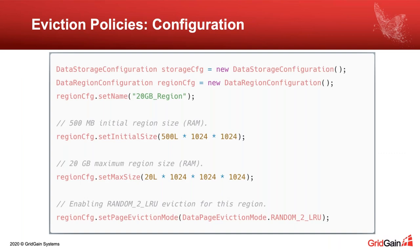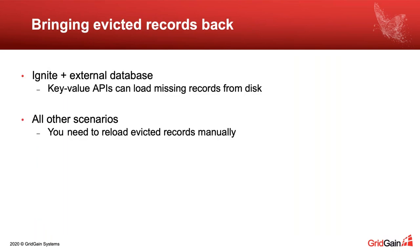From a configuration standpoint, when defining your data storage configuration, you create a data storage region — in this case 20 gigabytes in size. You set an initial size, telling the node to allocate 500 megabytes from the OS at startup, and then set the maximum capacity. Once the node goes beyond this maximum capacity, the eviction policy kicks in and Ignite automatically starts evicting pages and freeing up memory.